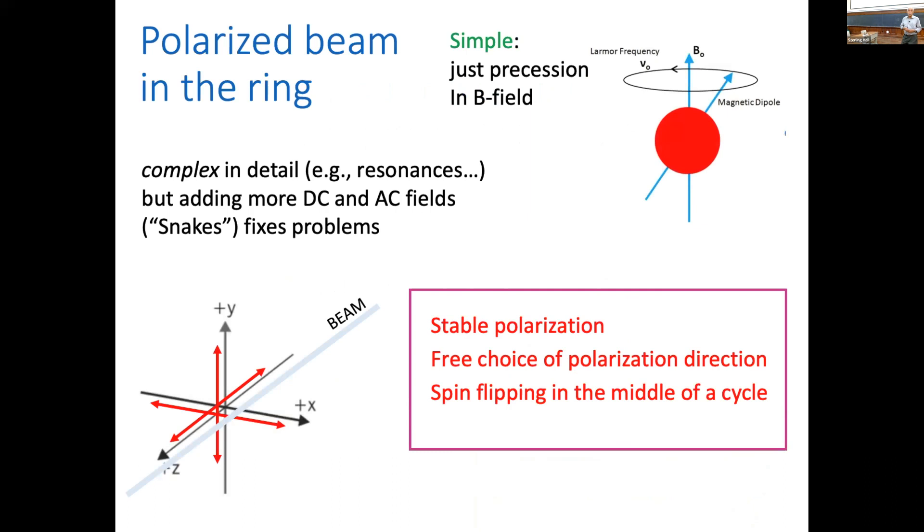The beam from the cyclotron, which was used to provide the beam to inject into the cooler, was polarized.